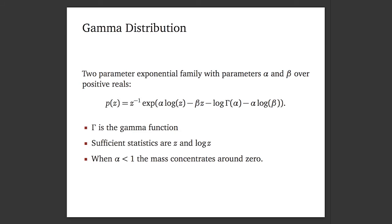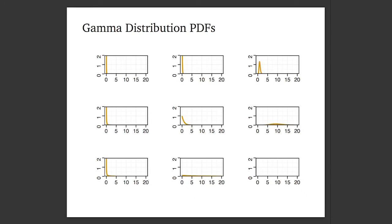The gamma distribution is a two-parameter exponential family over positive values, with sufficient statistics z and log(z). When the first parameter alpha is less than one, the mass peaks around zero. Here we have a plot of different gamma PDFs — going right, the shape parameter alpha increases; going down, the second parameter increases. For small shape values, regardless of the second parameter, there's a lot of probability mass placed near zero — a property we'll use to build interpretable deep exponential families.